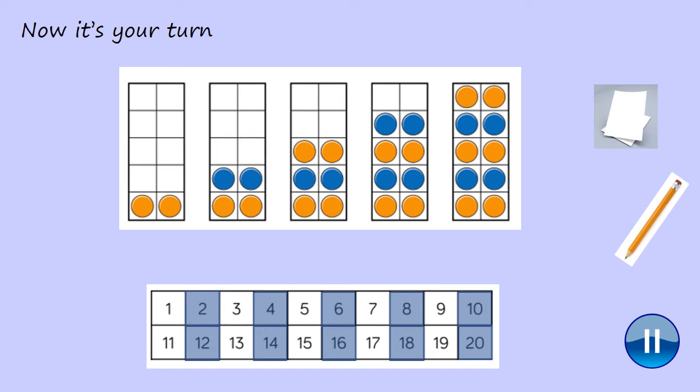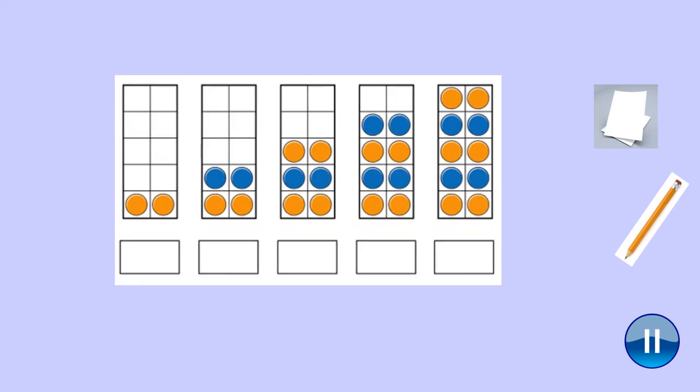Now it's your turn. Get out a piece of paper and a pencil from your home learning pack. I would like you to write down the number that you can see in each of these ten frames and we'll go through it together on the next slide. Pause the video while you do so. You should have written the numbers on your piece of paper to show the numbers that are represented in the ten frame. So you should have written two, four, six, eight, and ten. Give yourself a tiny tick for each number that you got correct. Well done.